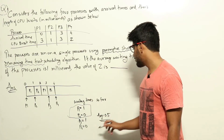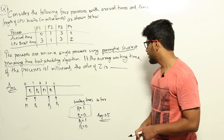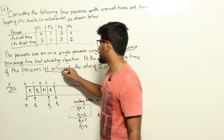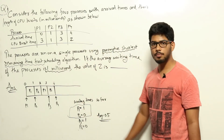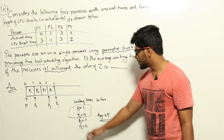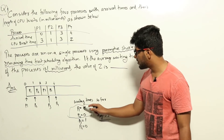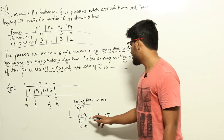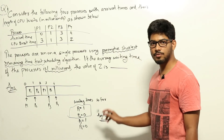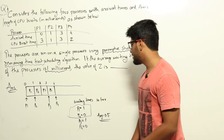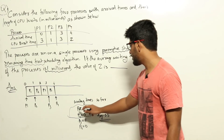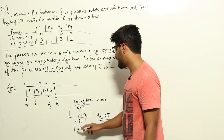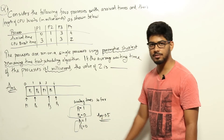The current total waiting time is 1 + 0 + 1 + 0 = 2 milliseconds, giving an average of 2/4 = 0.5 milliseconds. But the question states the average waiting time must be 1 millisecond, which means the total waiting time across all four processes must equal 4 milliseconds. Currently we have 2 milliseconds, so we need to add 2 more milliseconds of waiting time distributed between P3 and P4.